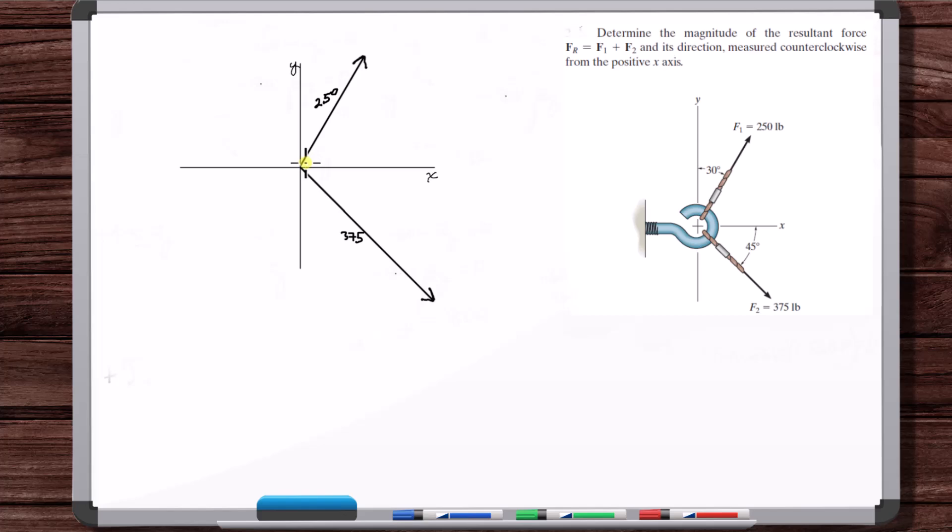Now, we can add these vectors with the triangle method or with the parallelogram method. Let's do the parallelogram method. We draw a line from the head of one vector parallel to the other vector, and then do the same thing on the other vector. And now draw the diagonal of the parallelogram. And that's your FR. This is 30 degrees. This is 45 degrees. We'll say that this angle here that we're looking for is alpha, and we'll say that this angle is theta.